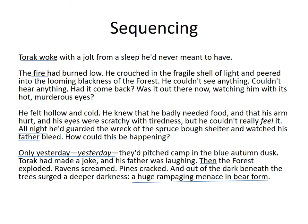Another part of sequencing is the focus on the fire. The extract only very briefly introduces Torak in that opening sentence, which forms a paragraph by itself, before shifting to describe the fire and the wider setting. Why does the writer do that? Why shift from only a brief introduction to Torak to starting to talk about a fire? When you look at the way the fire is introduced, of course it's emphasising that sense of threat again. Torak is crouching in the fragile shell of light and peering into the looming blackness of the forest, increasing that sense of drama and tension.